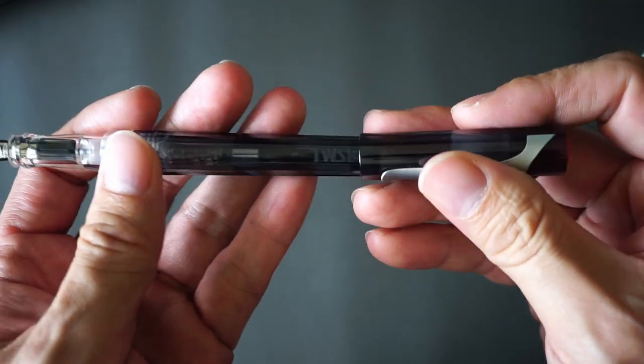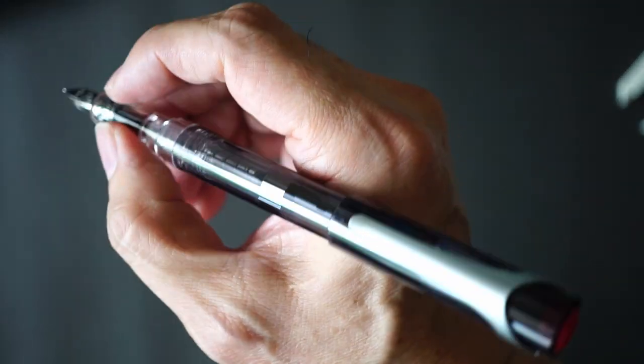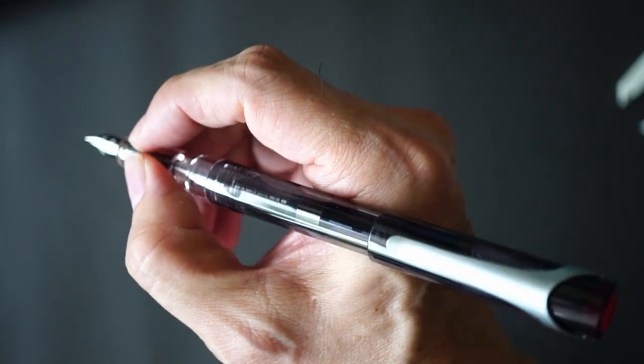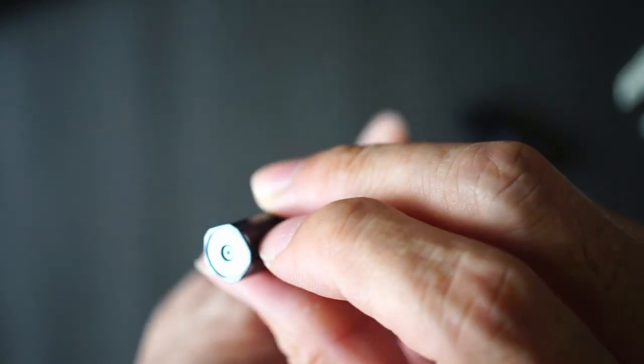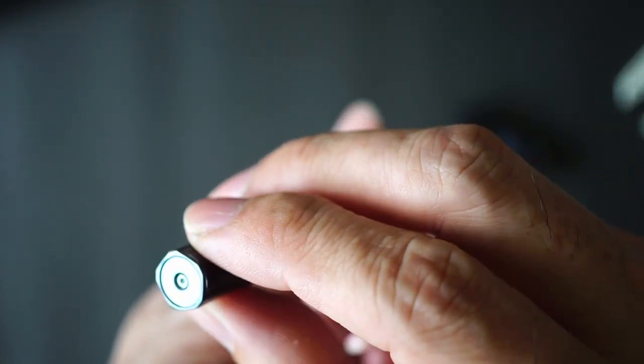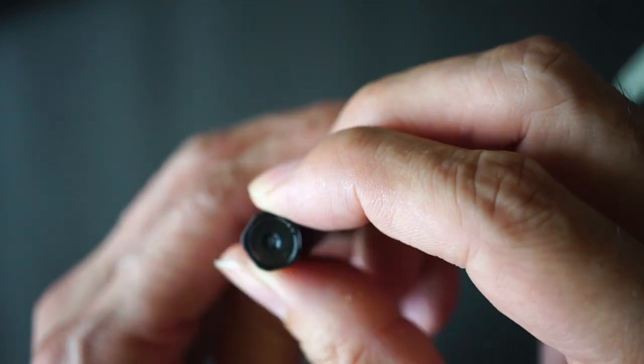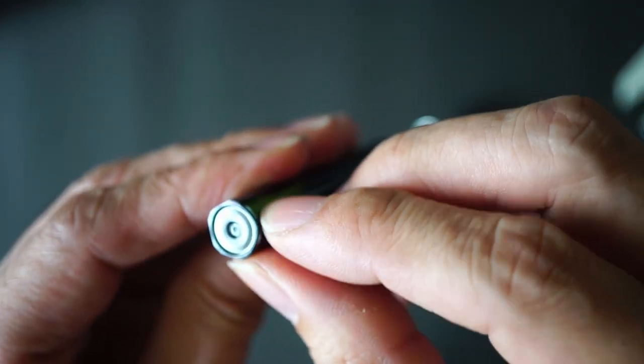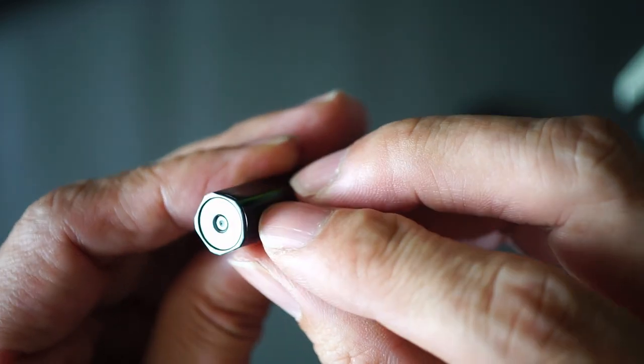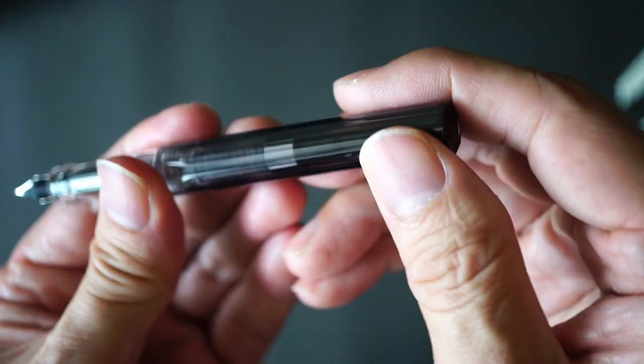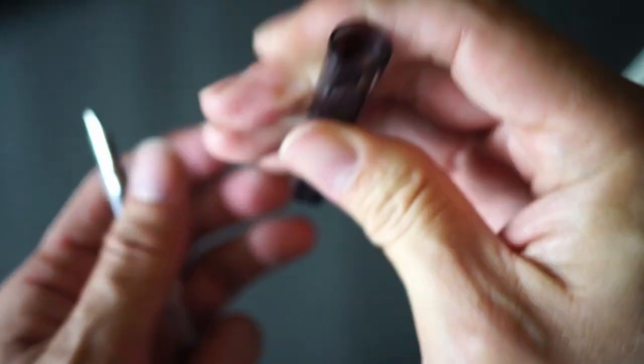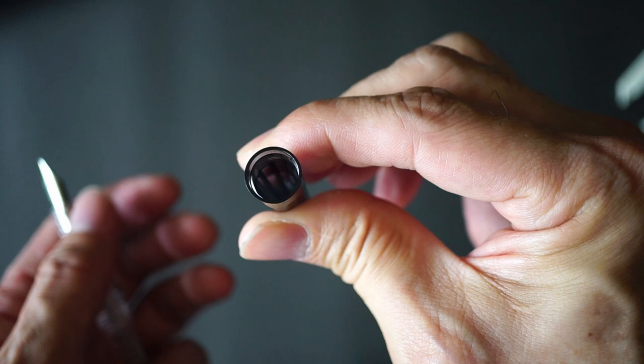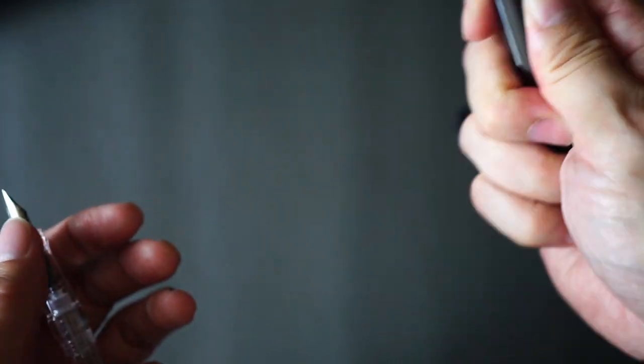The pen probably does post and I think the posting makes it a nice length, even though I don't really post my pens. Looking at the barrel, it has that Eco reminiscent type design. I believe the Eco actually has six sides. This one has five facets. It does feel relatively light and relatively cheap feeling plastic that they use.